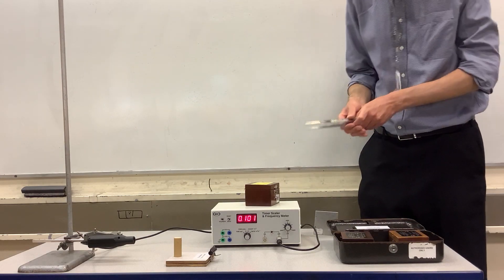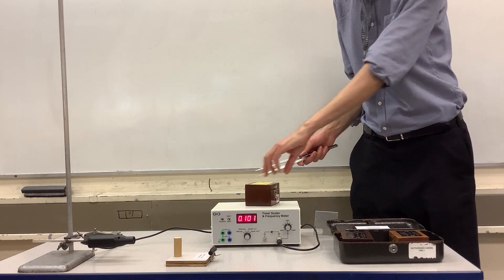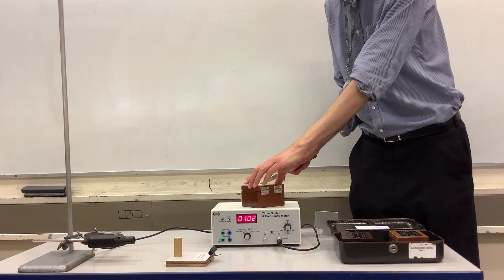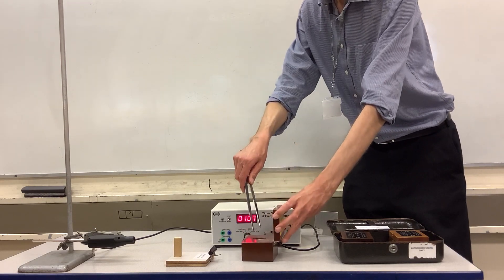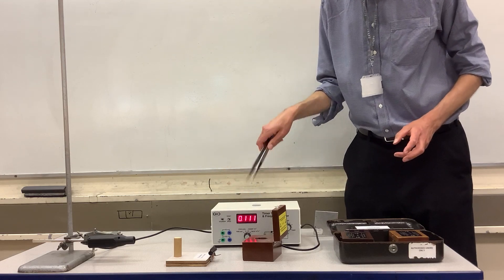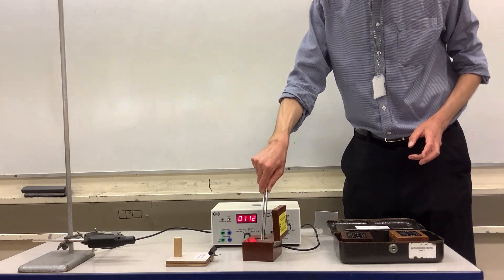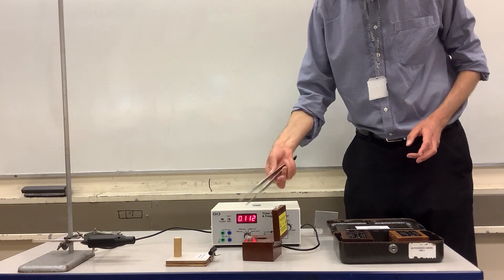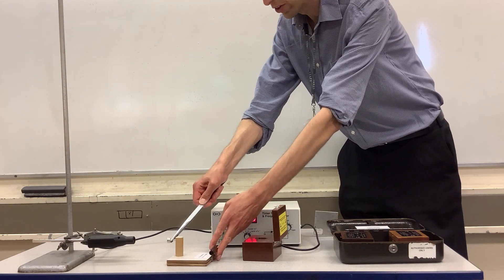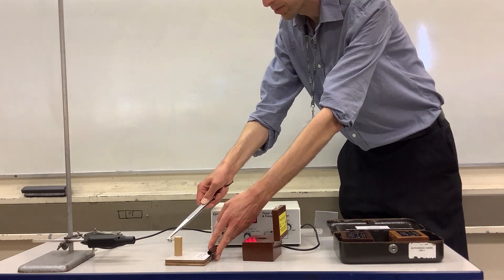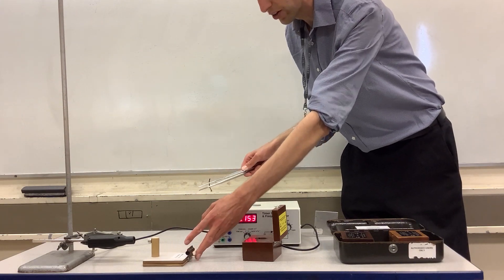Let's actually get the cobalt-60 source out of its box and demonstrate its penetrating power more clearly. Once again, we need to remove the lead, take out the cobalt-60 source, and pop that into the holder. I'll move it a little bit closer.